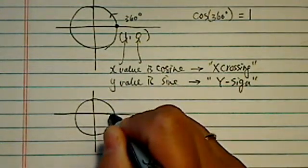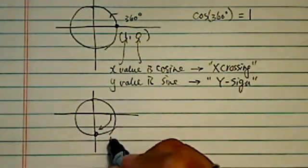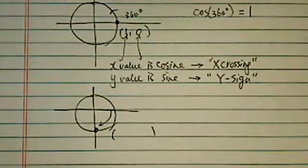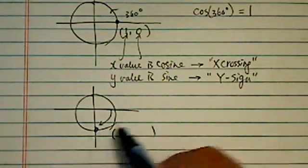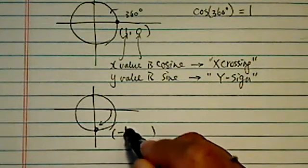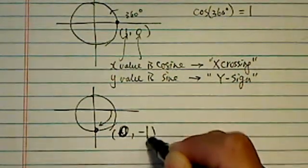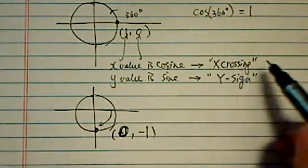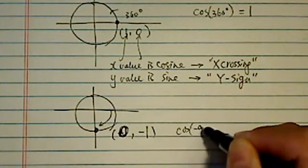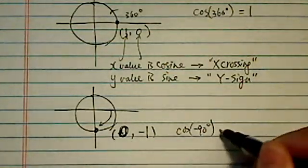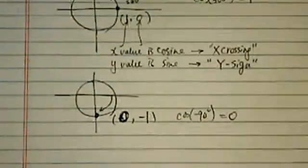Minus 90 going backward, counterclockwise, you end up over here. Let's write the termination point, let's write a coordinate, minus, oh no, minus 1. It's 0, minus 1. Okay, so again, x crossing, so cosine of minus 90 is the x value equal to 0.